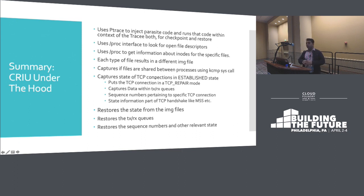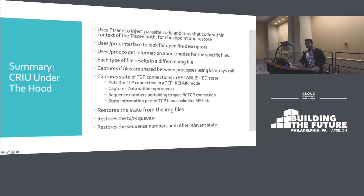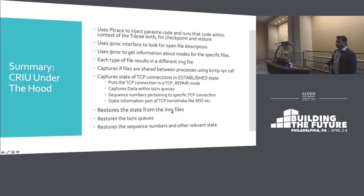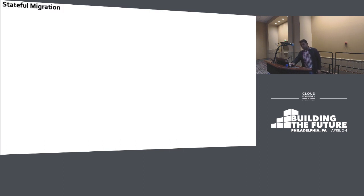CRIU also takes care of TCP connections. For all open established TCP connections, it moves them back to TCP repair mode. Then the socket buffers — TX and RX queues — are captured. It also takes care of the packet sequence numbers pertaining to those TCP connections, and saves a few TCP handler data fields. At restore, it restores the state from the image file, restores the socket buffers for TCP connections, and restores all packet sequence numbers.